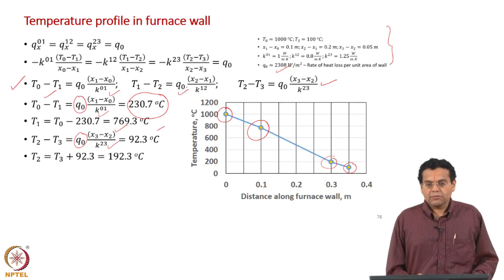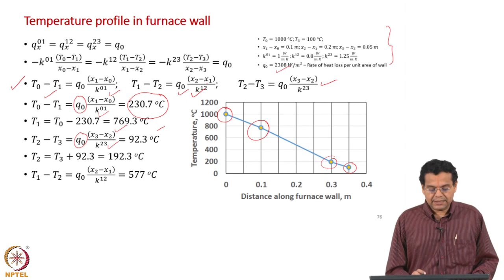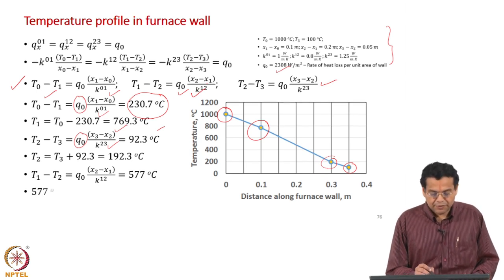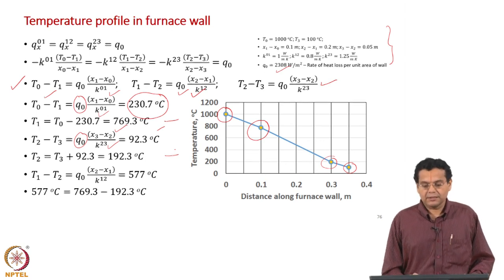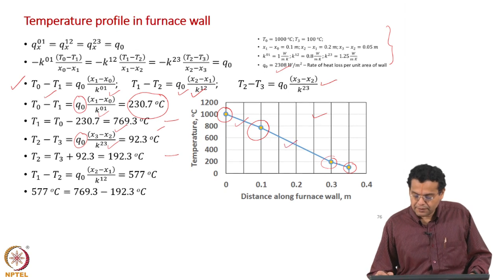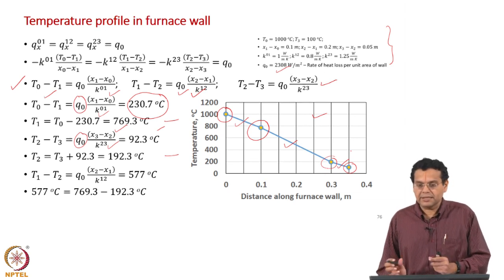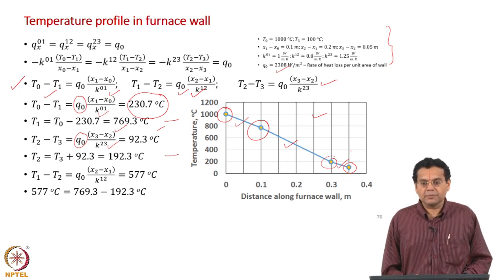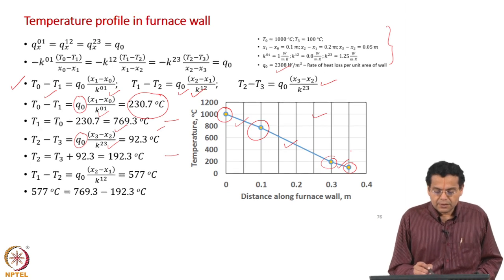The second equation for the second layer is not required, but we can use it for cross-checking. Substituting gives 577°C, and the difference between T_1 and T_2 is indeed 577°C. The temperature profile is shown with a linear profile within each slab, which is because we assumed thermal conductivity to be constant. If thermal conductivity depends on temperature, the profile would not be linear.